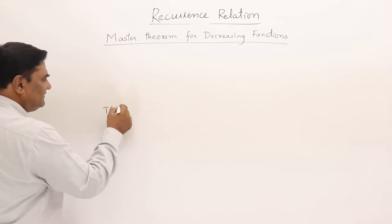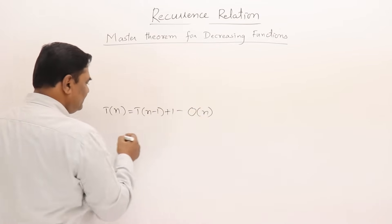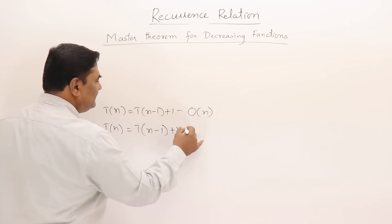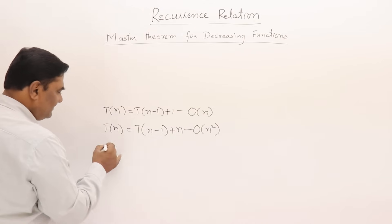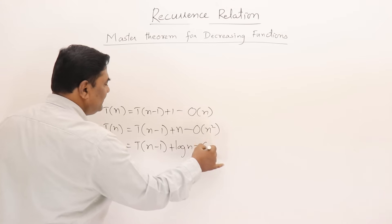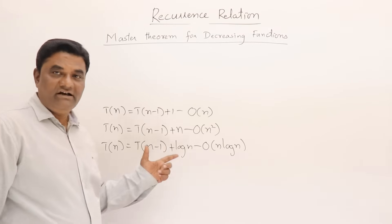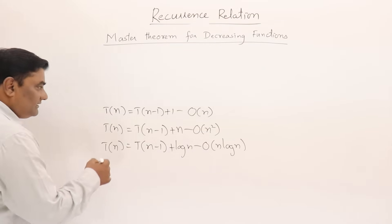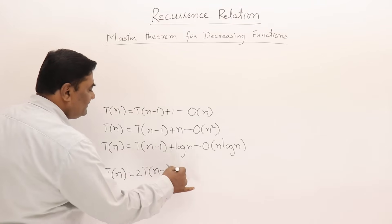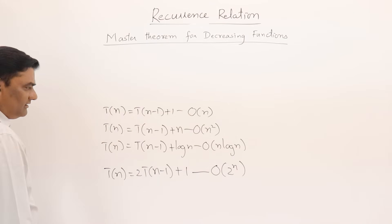We have already seen that T(n) = T(n-1) + 1 was O(n), T(n) = T(n-1) + n was O(n²), T(n) = T(n-1) + log n was O(n log n). We also saw that T(n) = 2T(n-1) + 1 gave the answer as 2^n.